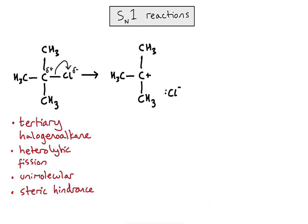Once heterolytic fission has occurred, I end up producing two things — a positive species and a negative species. That's because both electrons in that bond went to one atom: the chlorine has gained its own electron plus an extra electron, giving it a negative charge, while the carbon has lost the electron that originally belonged to it, leaving it with a positive charge.